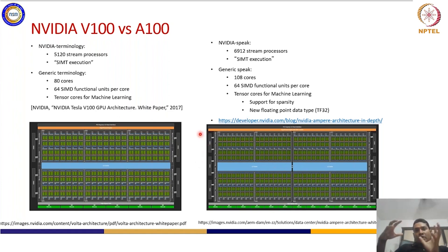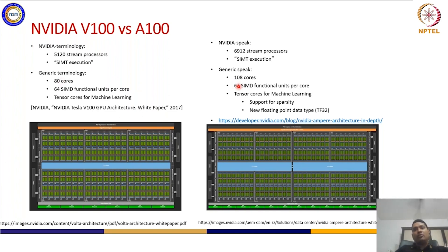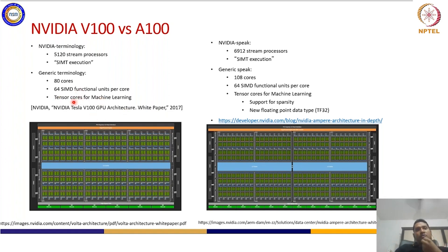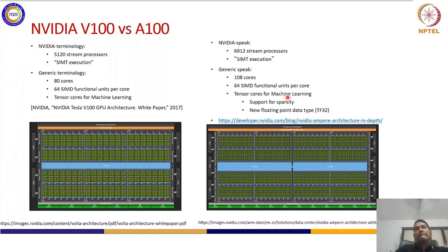You can see how much increase in the number of cores can be accommodated — from 80 cores to 108 cores in two years. From the precision point of view, this series of GPUs has tensor cores for machine learning, available in the Volta series, NVIDIA P100, as well as Ampere. The Ampere series has a new floating point data type TF32, giving more flexibility in model training, and also supports sparsity in machine learning.